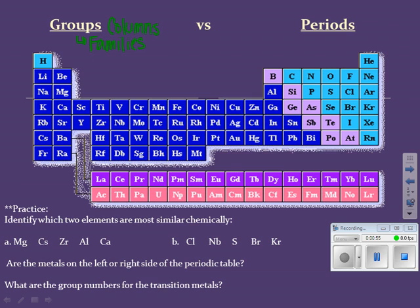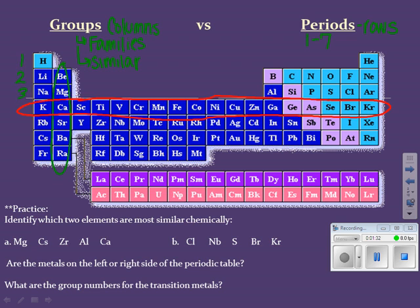The next one is periods — those are the rows, meaning they go left or right. There are seven periods on the periodic table. So groups go up and down, and periods go left to right, one through seven.